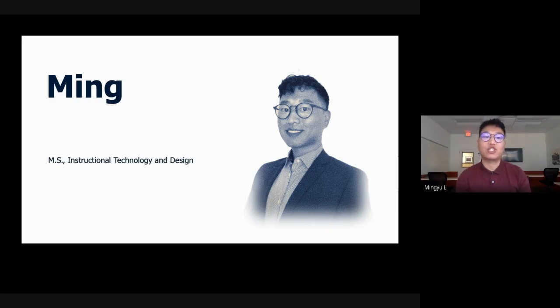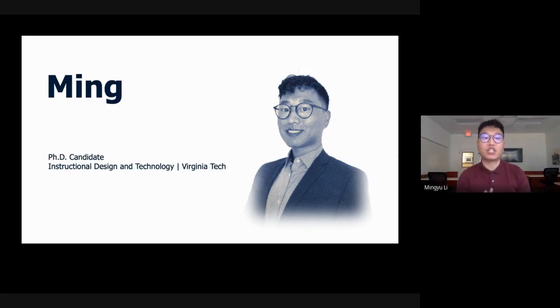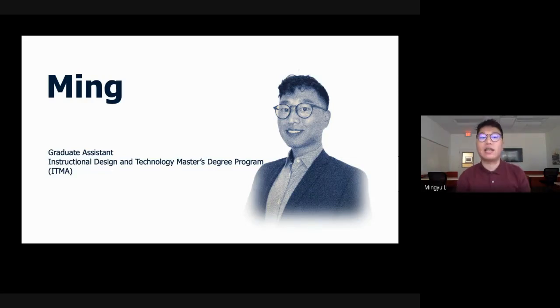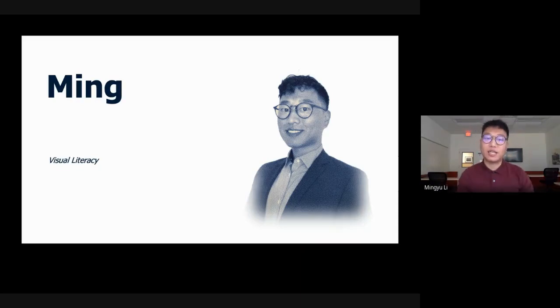I prepared a little background about myself. My name is Mingyu Li, or Li Mingyu in Chinese — we put the last name first. I'm originally from China. You can call me Ming. I came to the U.S. for my Master of Science in Instructional Design and Technology first, and then I came to Virginia Tech to pursue my PhD degree in Instructional Design and Technology. Currently, I'm working as a graduate assistant in the IDT Master's degree program — an asynchronous online program — where I grade assignments and help students in the Visual Literacy course.